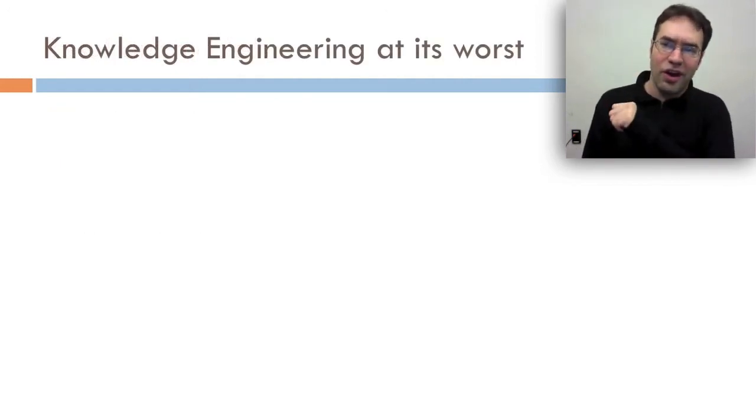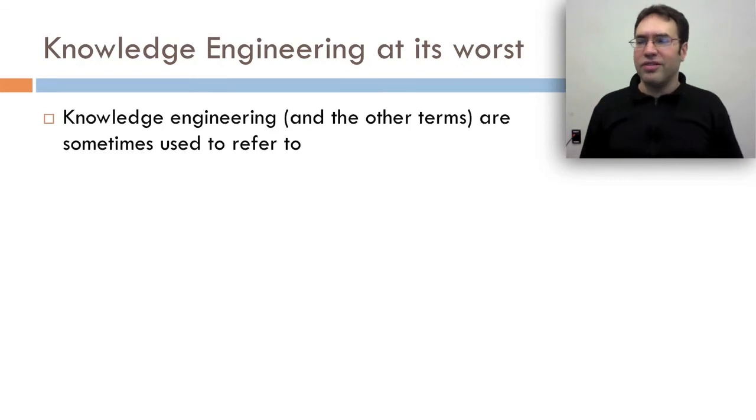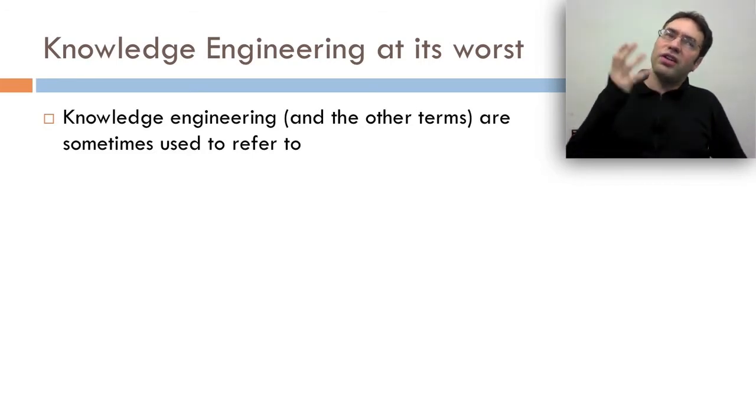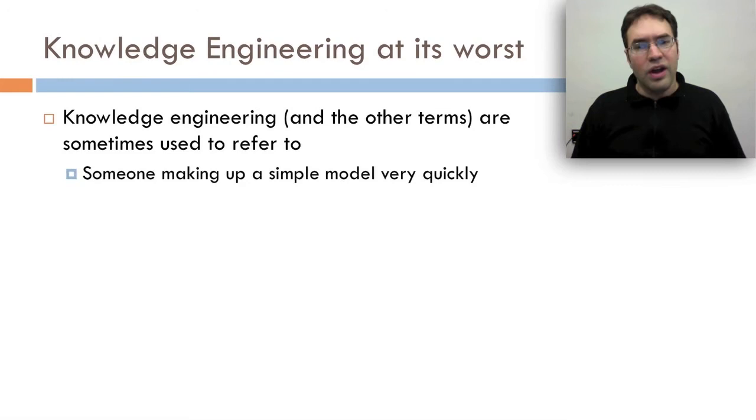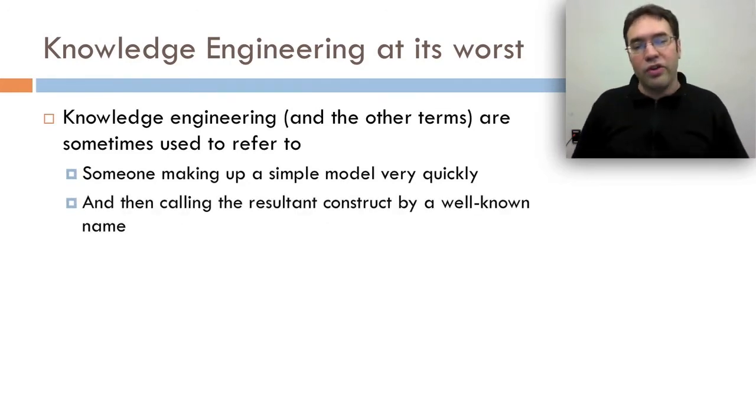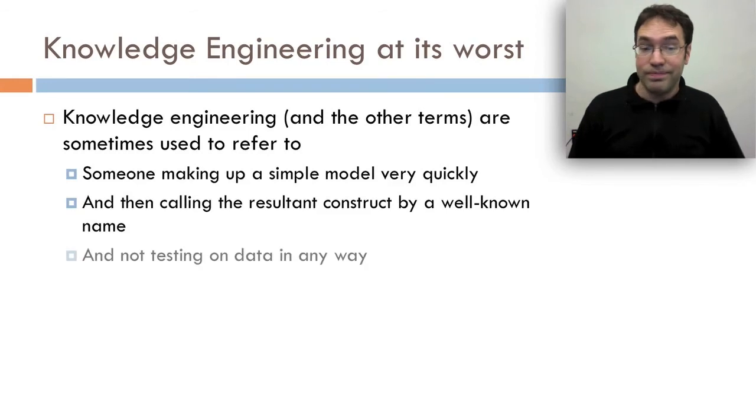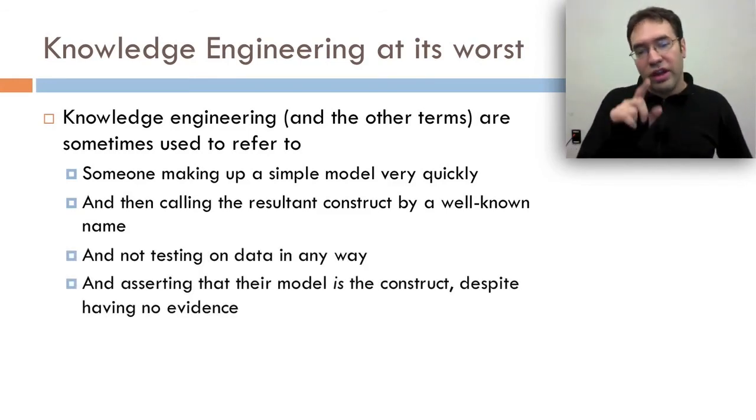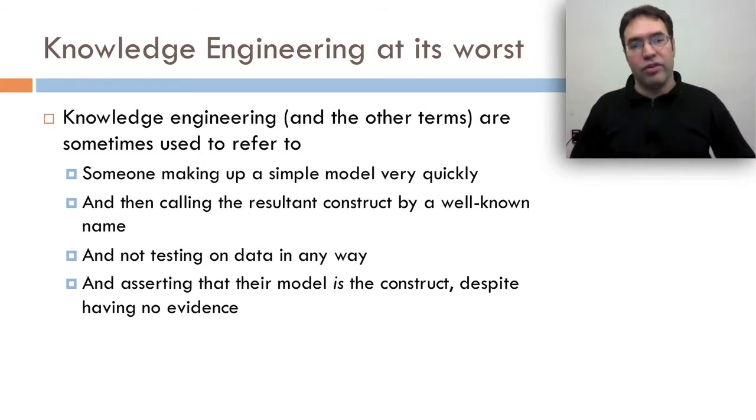Now let's talk about knowledge engineering at its worst. Knowledge engineering and rational modeling and cognitive modeling are sometimes used to refer to something different than this deep, reflective, high-quality data-driven process. Instead, they're sometimes used to refer to making up a simple model very quickly, and then calling the resultant construct by a well-known name, and not testing on data in any way, and asserting that their model is the construct despite having no real evidence for that.